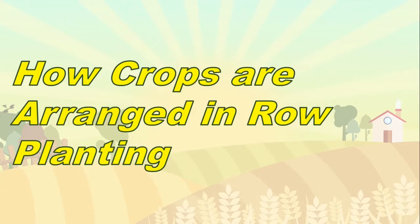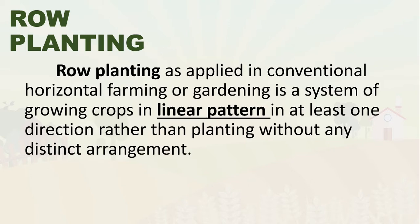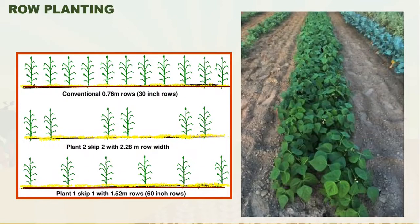How are crops arranged in row planting? Row planting, as applied in conventional horizontal farming or gardening, is a system of growing crops in a linear pattern in at least one direction, rather than planting without any distinct arrangement. For example, we can use a method where we plant two and skip two crops before planting another two, or plant one and skip one with six-inch distance between plants.